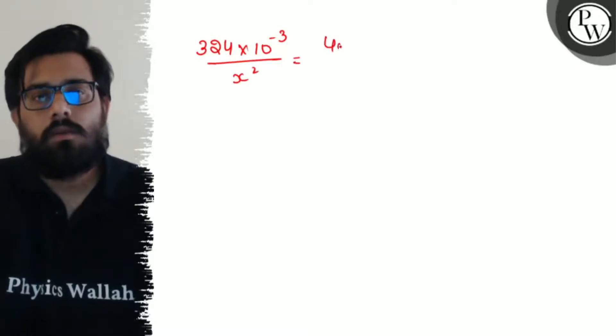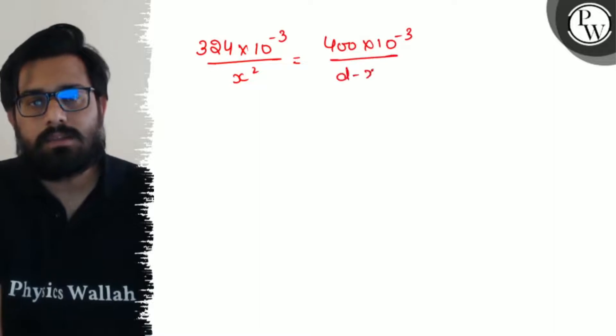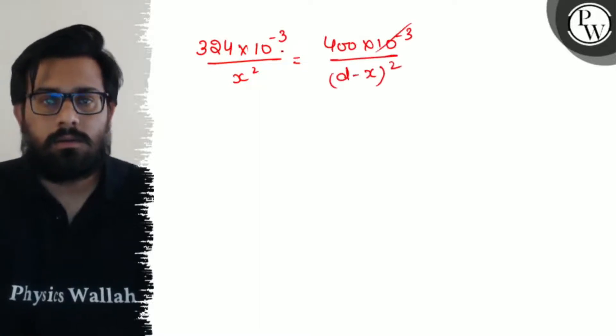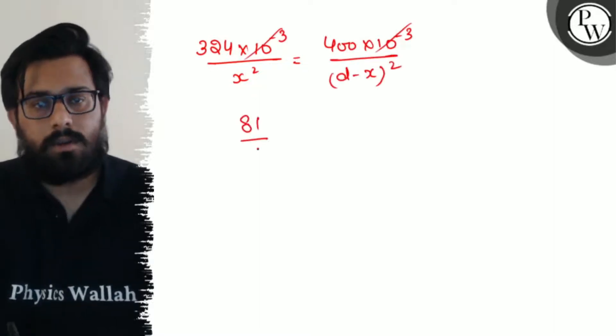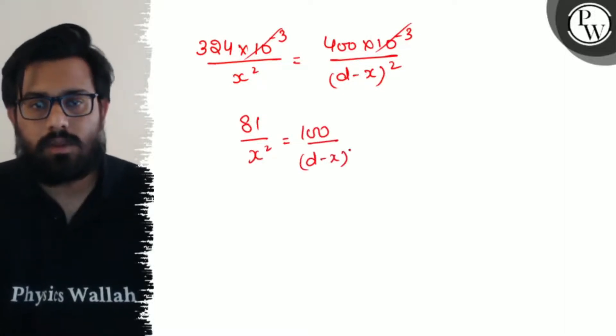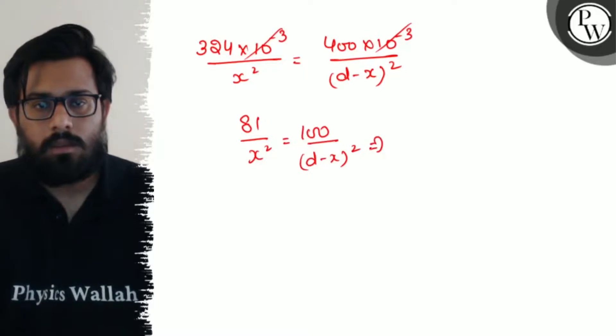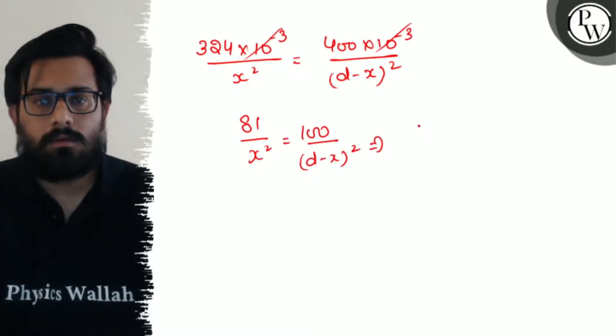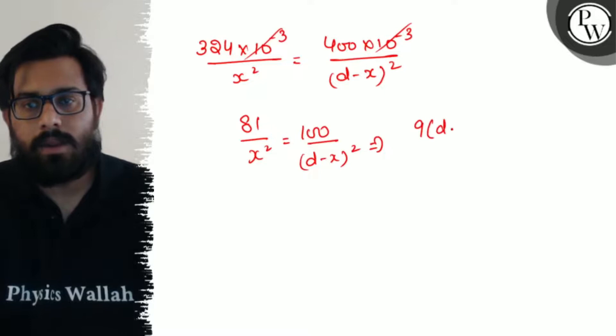Putting the values, 324 into 10 to the minus 3 upon x square equals 400 into 10 to the minus 3 upon d minus x whole square. Cancel out, we get 81 by x square is equals to 100 by d minus x.